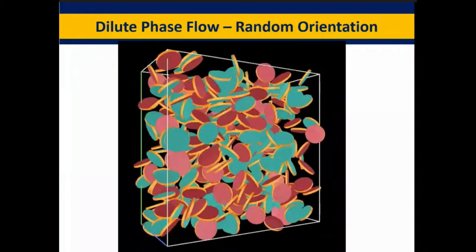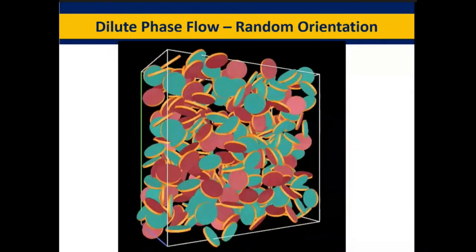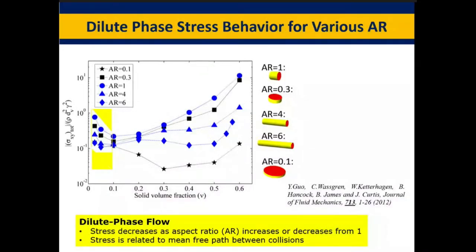In dilute phase flow, cylindrical rods and disks move over all of their random orientations. This particle shape has a dramatic effect on the stress — meaning the flowability, essentially the effective viscosity of a particle mix. How easy does it flow? That's going to relate to the cratering behavior in the NASA applications and many other applications discussed at the beginning of the talk.